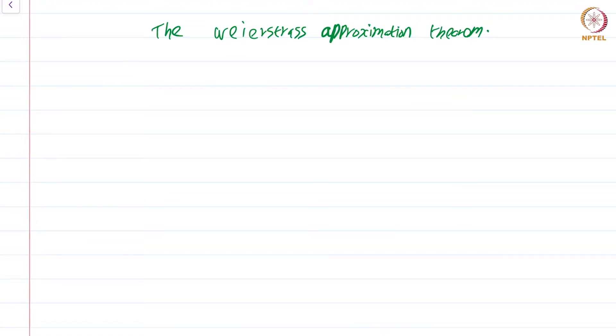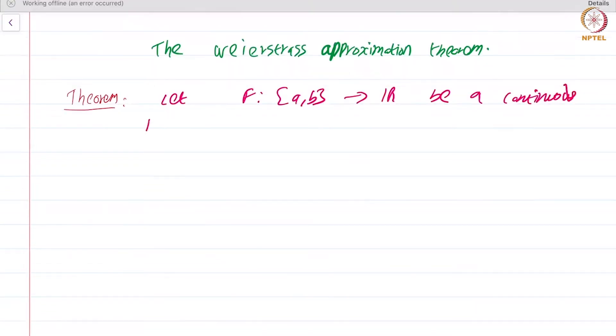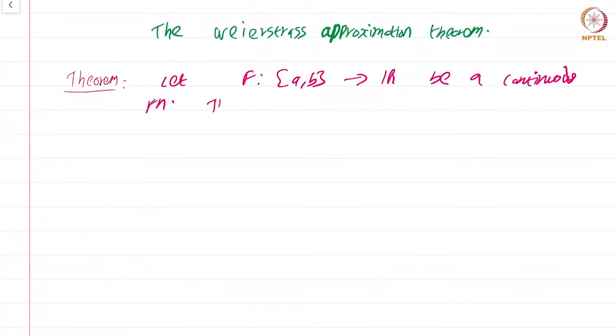Without further ado, let me state the theorem. Theorem: Let f from closed interval [a,b] to R be a continuous function. Then we can find polynomials p_n such that p_n converge to f uniformly on the closed interval [a,b].